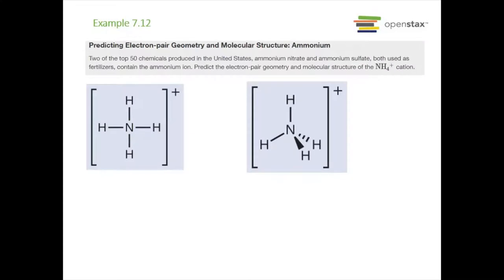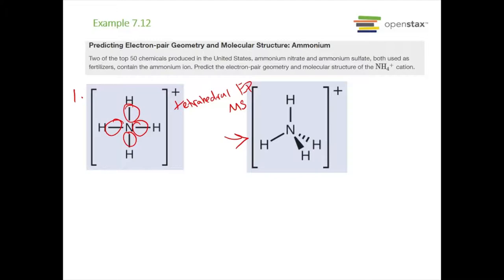Next example: the ammonium cation, NH4+. Drawing the Lewis structure, we have four single bonds around the nitrogen and no lone pairs. Since there are four electron-dense areas, this gives a tetrahedral electron pair geometry. With no lone pairs, the molecular structure is also tetrahedral. Redrawn to reflect its 3D nature using wedge-dash notation, it looks like a tetrahedron.